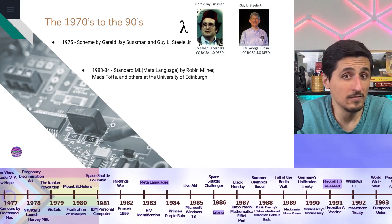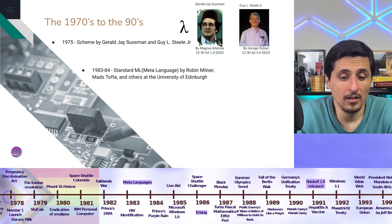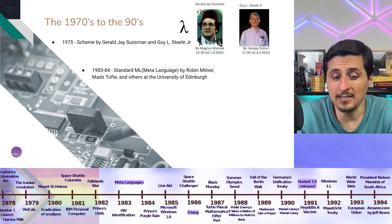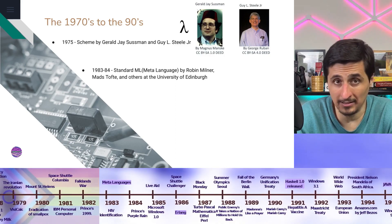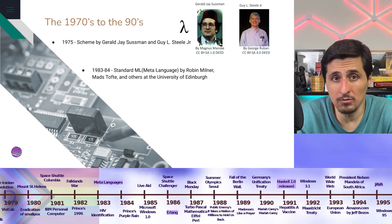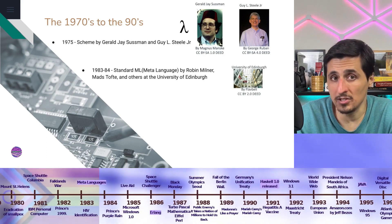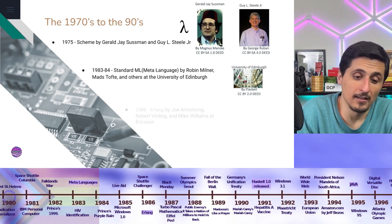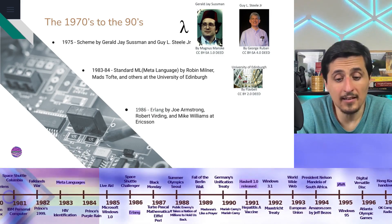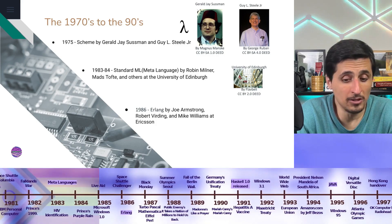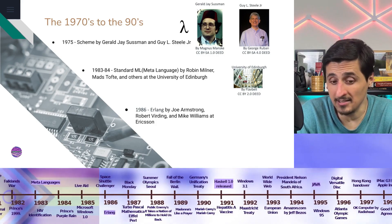Following suit, there were other languages, like the Standard Meta-Language, which appeared between 1983 and 1984, along with other meta-languages. The Standard Meta-Language was invented by Robert Milner, Matt Tofte, and others at the University of Edinburgh. After that, Erlang came along, invented by Joe Armstrong, Robert Virding, and Mike Williams at Ericsson in 1986.